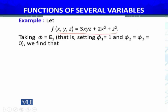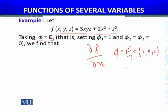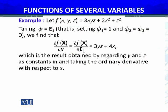Let's take a function whose directional derivative we have already found, and now calculate its partial derivatives using the directional derivative definition. For ∂f/∂x, the direction vector φ equals e₁, which in 3D is (1, 0, 0). So φ₁ = 1, φ₂ = 0, φ₃ = 0. Substituting into the directional derivative formula gives ∂f/∂x = 3yz + 4x, which is exactly the same result you get by treating y and z as constants and taking the ordinary derivative with respect to x.